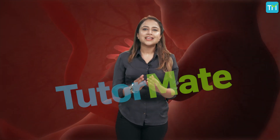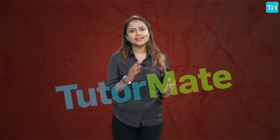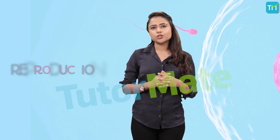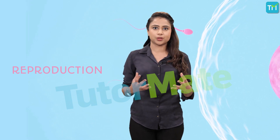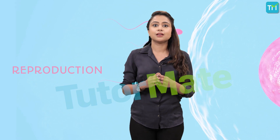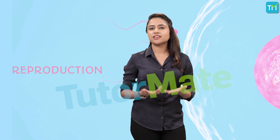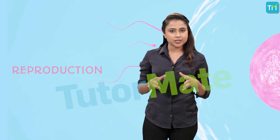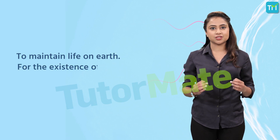How beautiful and fascinating life on earth is! But do you know different organisms bring life on earth differently? Let's see how organisms reproduce. Before jumping on the mechanism of reproduction, let us understand why organisms reproduce. Unlike other essential processes such as nutrition, respiration, and excretion, reproduction is not necessary to maintain the life of an individual. In fact, reproduction is an energy-spending process. Even then, organisms reproduce — and there are three major reasons: one, to maintain life on earth; two, for the existence of species; and three, for the evolution of species.